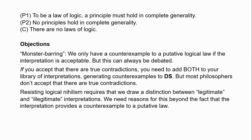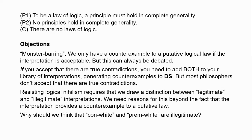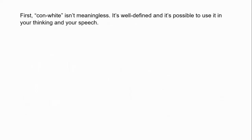We need reasons for thinking an interpretation is illegitimate beyond the fact that it provides a counterexample to an apparent logical law. In the case of true contradictions there's a huge literature with arguments for and against. So are there reasons for thinking that the predicates con-white and prem-white are illegitimate? Well, con-white certainly isn't meaningless — it's perfectly understandable and well-defined. It's possible to use this predicate in your thinking and speech. It's an unusual predicate, but there are plenty of unusual predicates — just take the predicate 'grue' from Goodman's new riddle of induction.